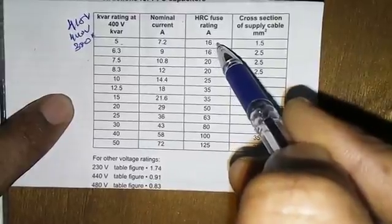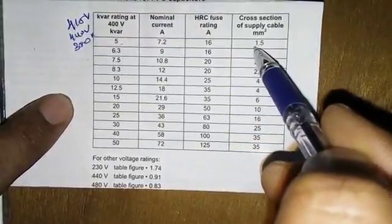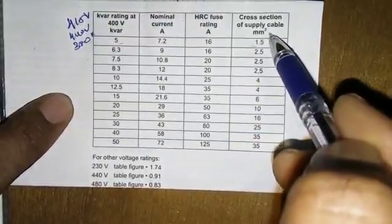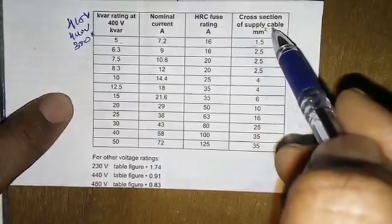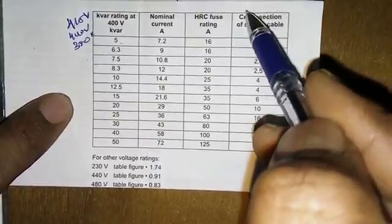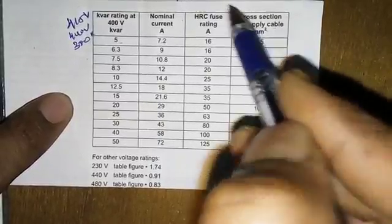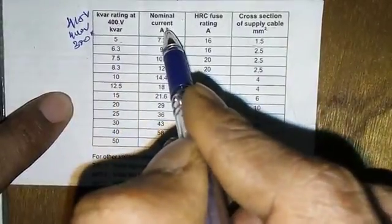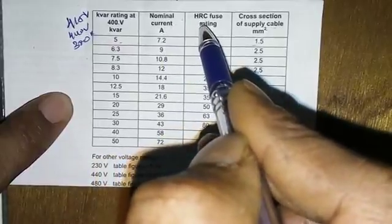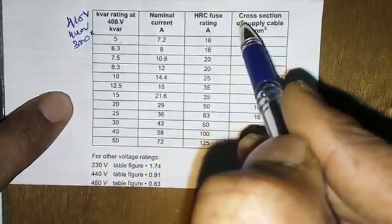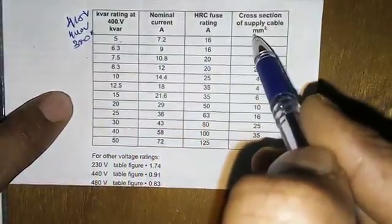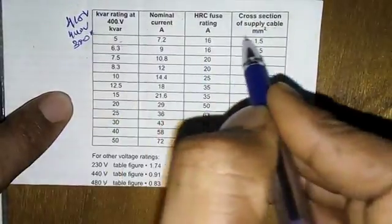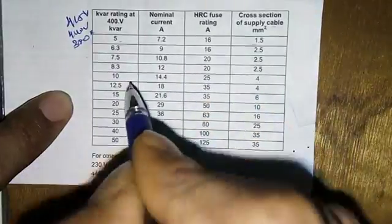So this is a basic table. We have current rating, HRC fuse rating. It has 35 sq.m. and 50 kVAr.